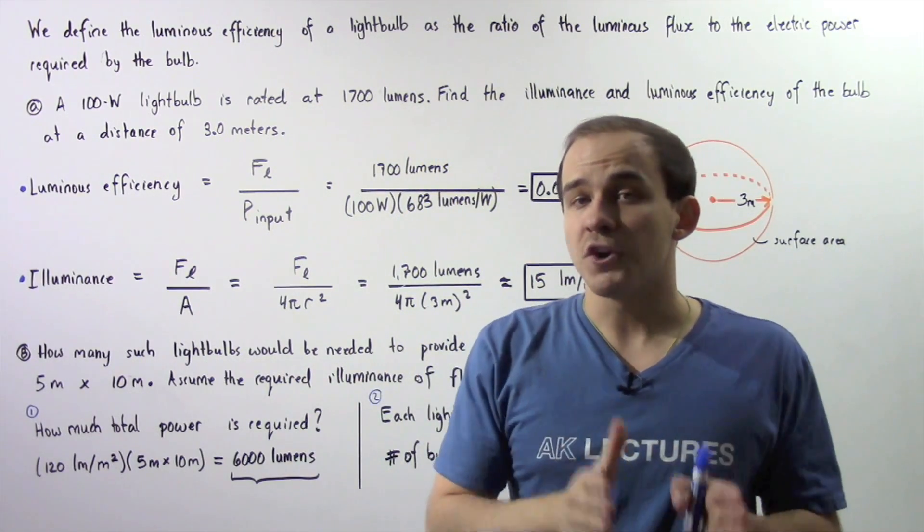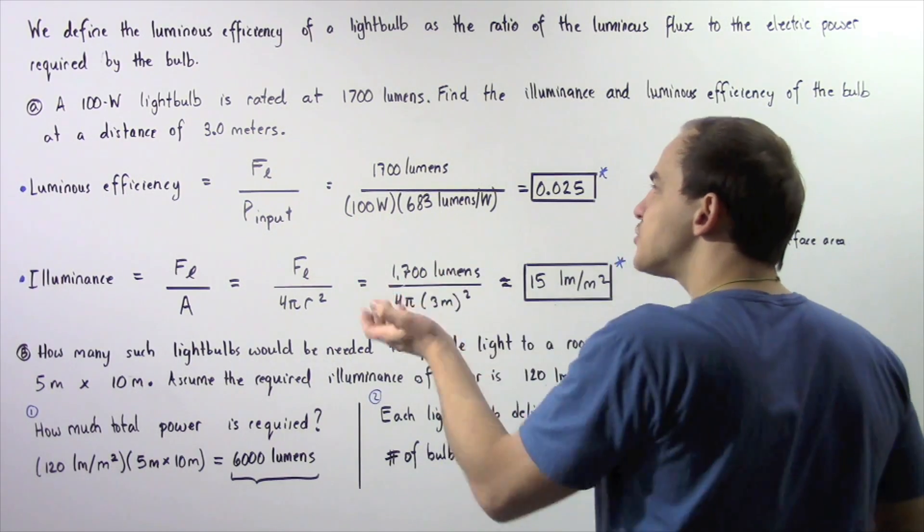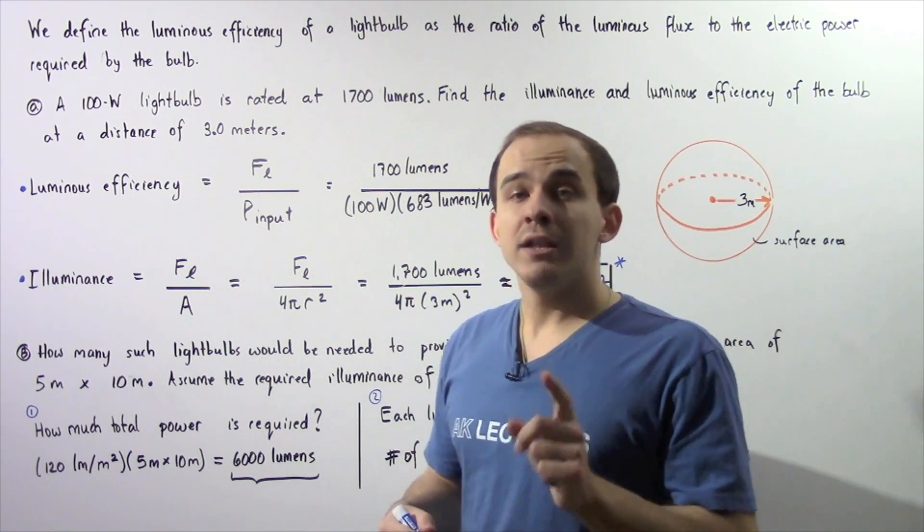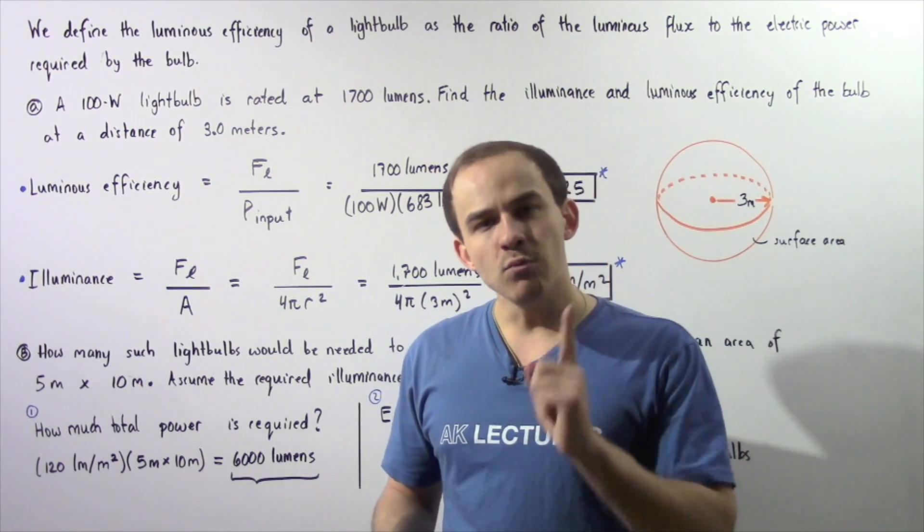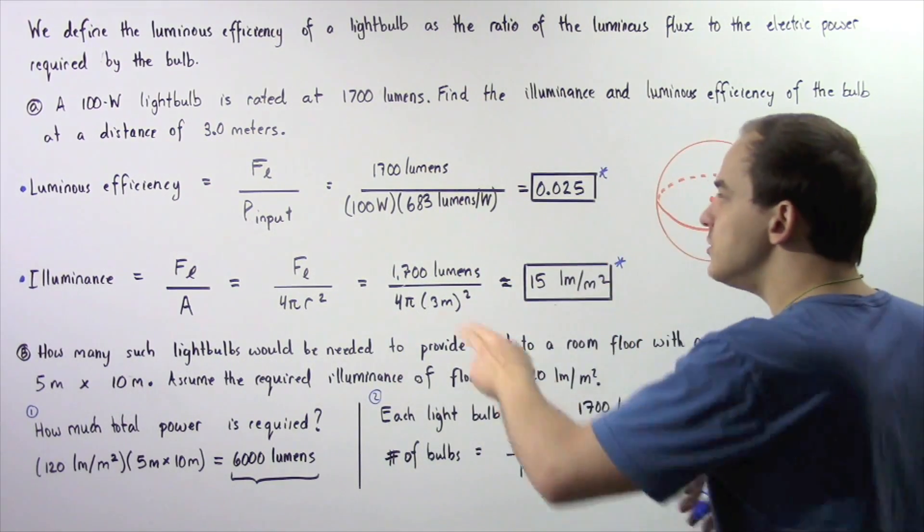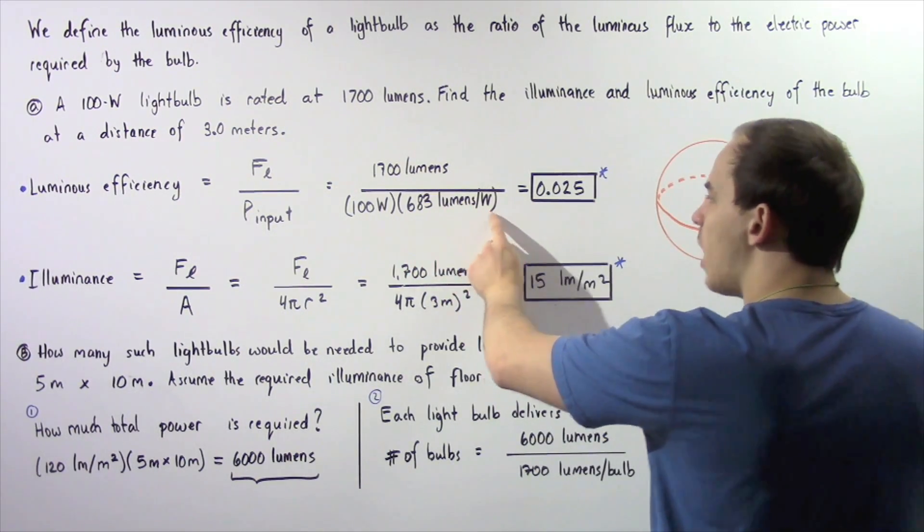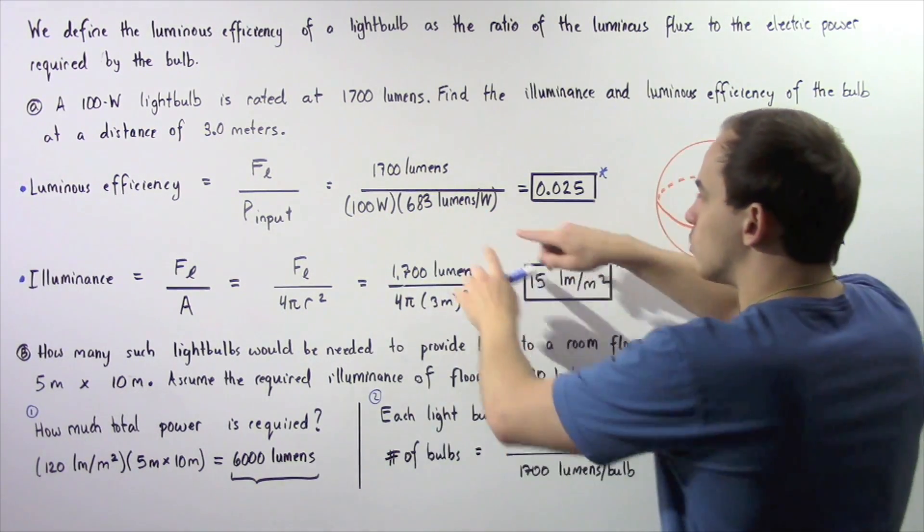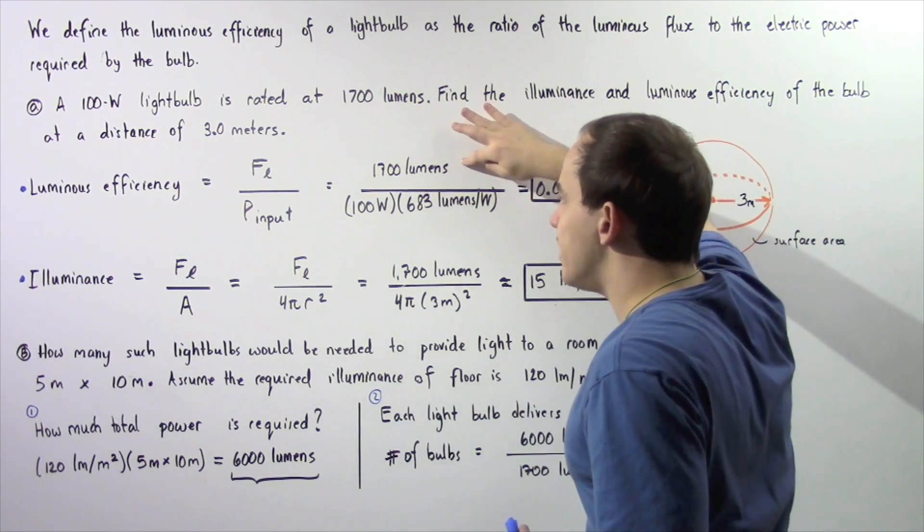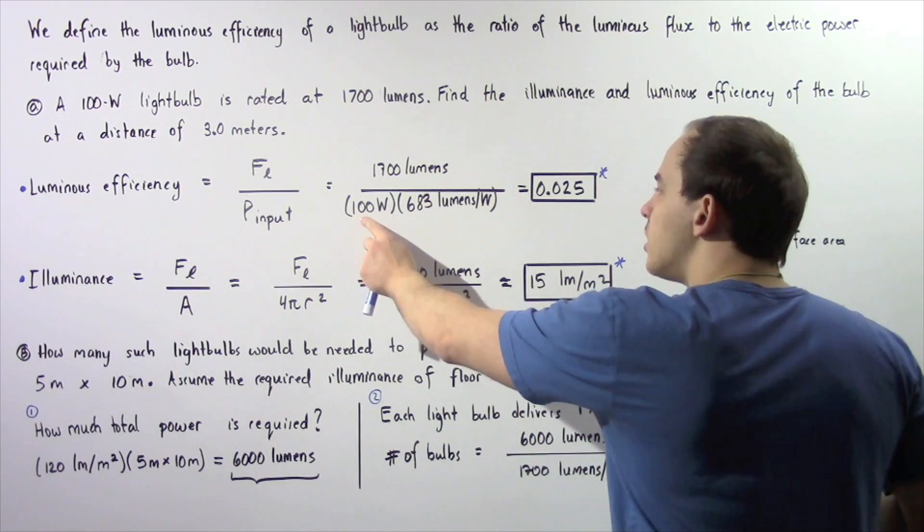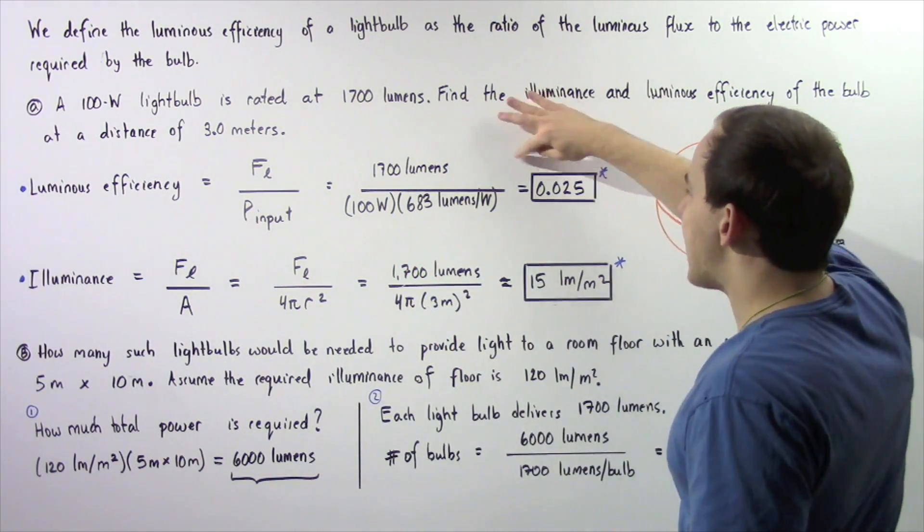Now the denominator is 100 watts. We have to convert watts into lumens. So the denominator is 100 watts multiplied by - well there are 683 lumens in one watt. So that means 100 watts multiplied by 683 lumens per watt. The watts cancel and we're left with lumens.